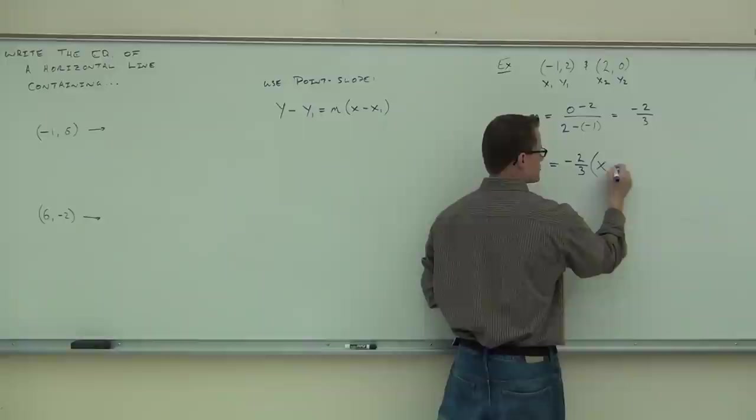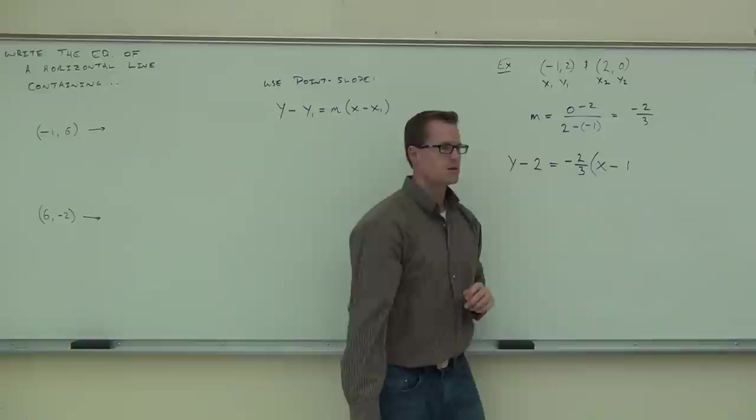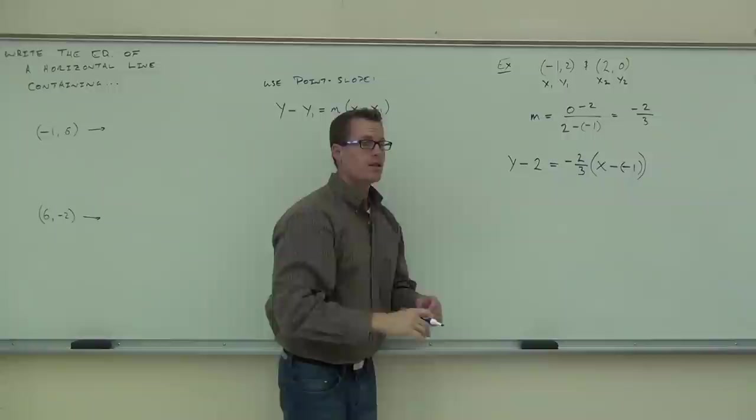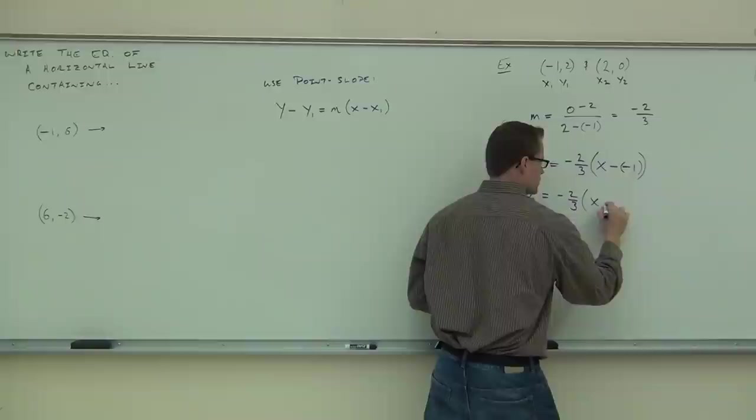Is this graph climbing or falling from left to right? Falling — negative slope, exactly right. Now we have our slope, which is great. We've got two points; one of them is already outlined as x1, y1. So we can go ahead and use the point-slope formula now. We're going to have y minus y1. In our case, y1 happens to be two, so I'm going to have y minus two. Equals m — we just found our m, make sure you have negative two-thirds. x minus what? Negative one. Not x minus one — this is x minus negative one. Let's do a little work: y minus two equals negative two-thirds times x plus one.